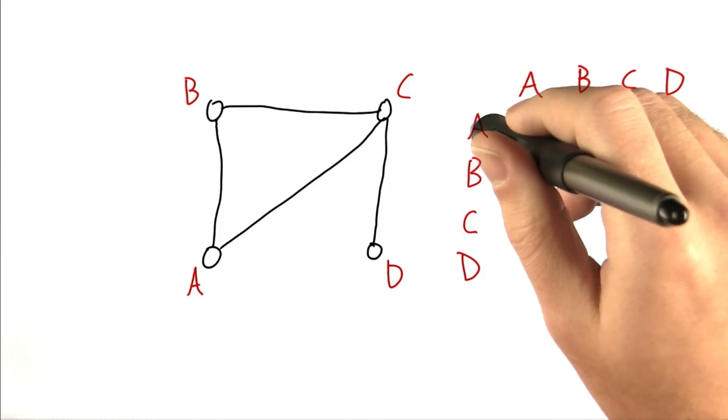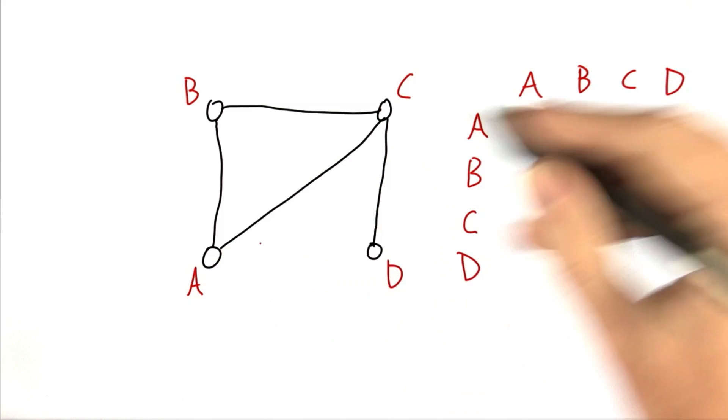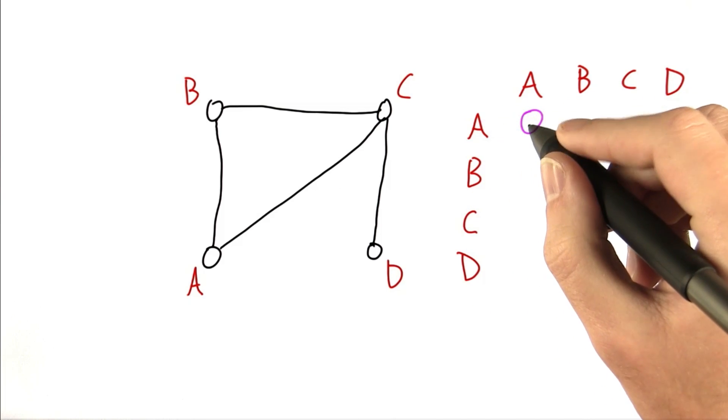So let's look at A. A isn't connected to A, and we're going to represent that by writing down a 0.